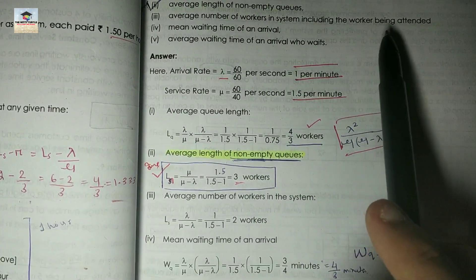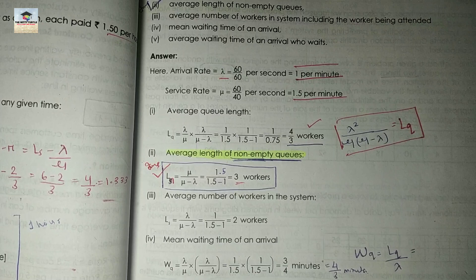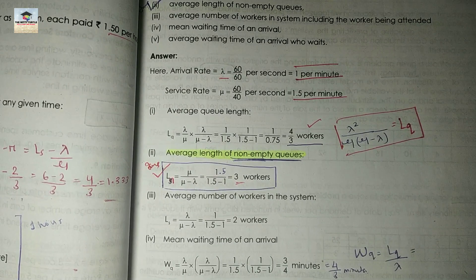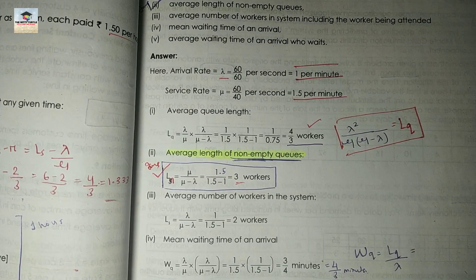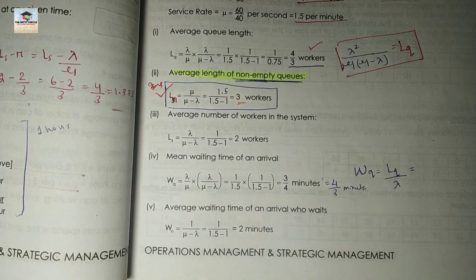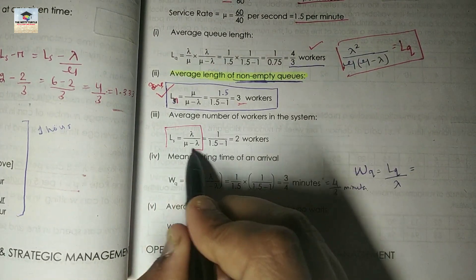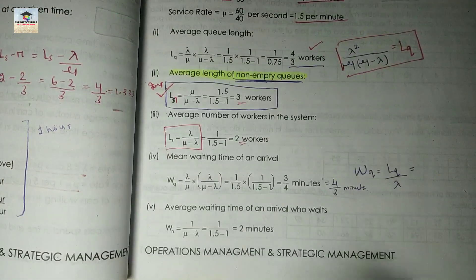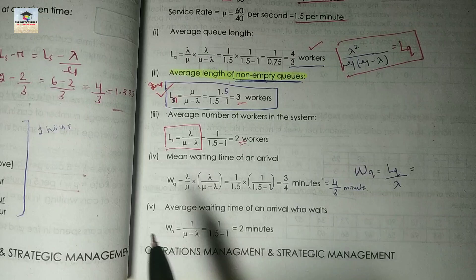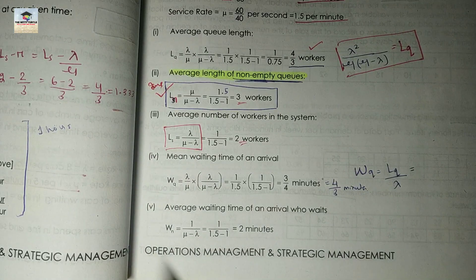The third point asks for the average number of workers in the system, including the worker being attended. So this includes workers who are waiting and those who have already been called to service. The formula is Ls, which we have already covered.